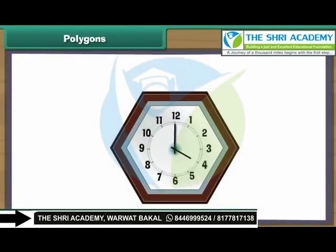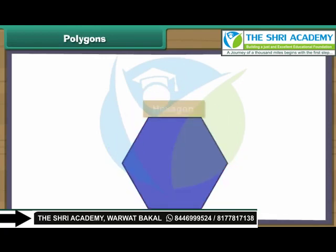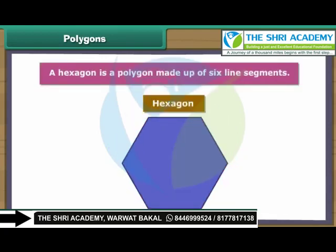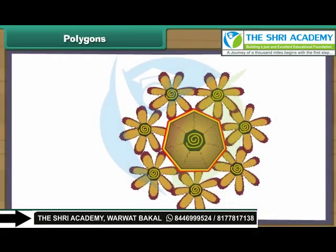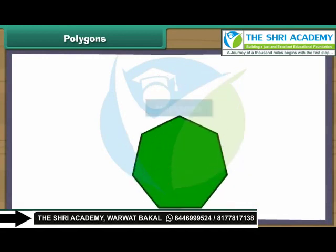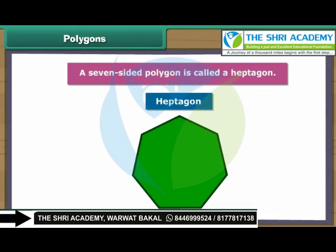Here is a clock. Let us provide its borders. We have a border of six line segments for the clock. A hexagon is a polygon made up of six line segments. Let us create a wall hanging using seven straws. The rainbow wall hanging with seven line segments is ready. A seven-sided polygon is called a heptagon.